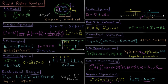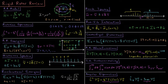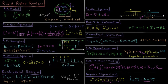Very important in this chapter are the rotational operators. The angular momentum squared operator has a functional form in spherical polar coordinates in terms of r, theta, and phi.